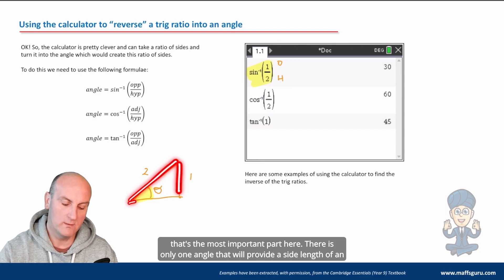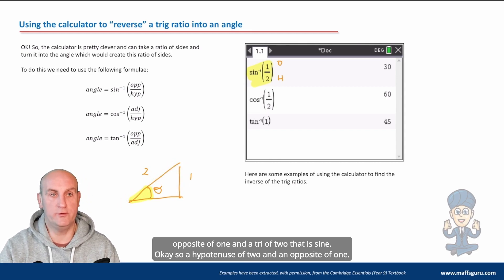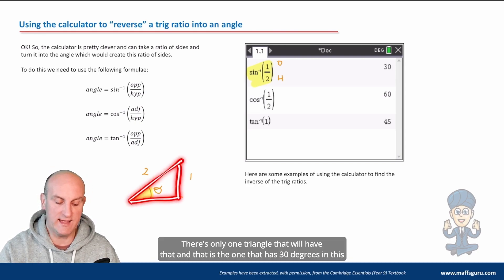There is only one angle that will provide a side length of an opposite of one and a hypotenuse of two that is sine. So a hypotenuse of two and an opposite of one. There's only one triangle that will have that.